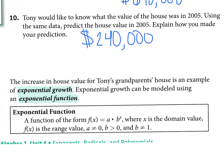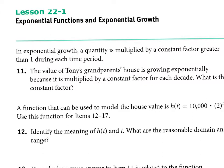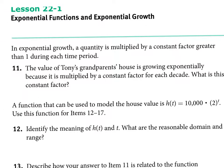Number eleven: in exponential growth a quantity is multiplied by a constant factor. The value of Tony's grandparents' house is growing exponentially because it is being multiplied by a constant factor each decade. Looking at the ratio column in the table, they are all 2 — because the house value is multiplied by 2 every single decade. The constant factor is 2.